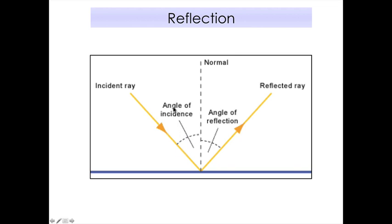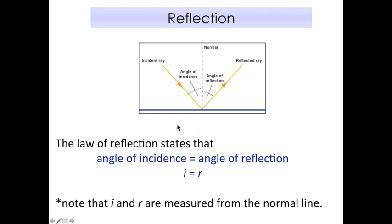The angle of incidence is measured from the light ray to the normal — from the light ray to the normal. We do not consider the angle between the light ray and the surface; that is not the angle of incidence. Similarly, the angle of reflection is measured from the reflected ray to the normal. Make sure you copy down these parts of the diagram.